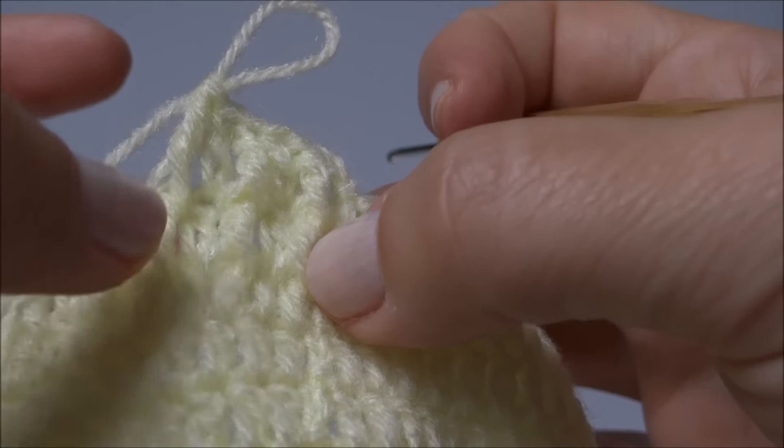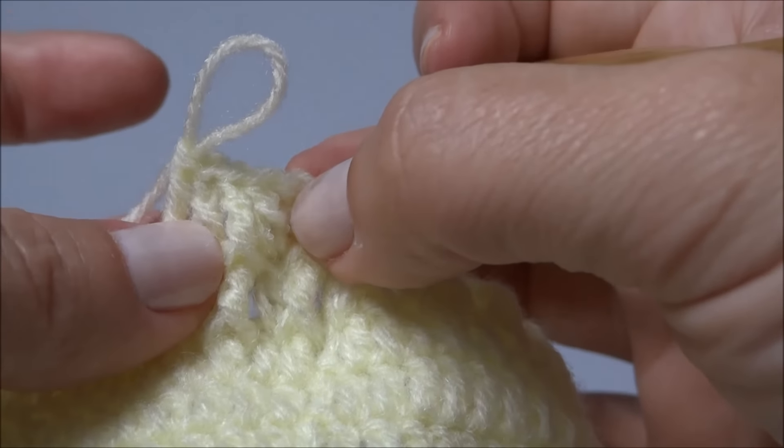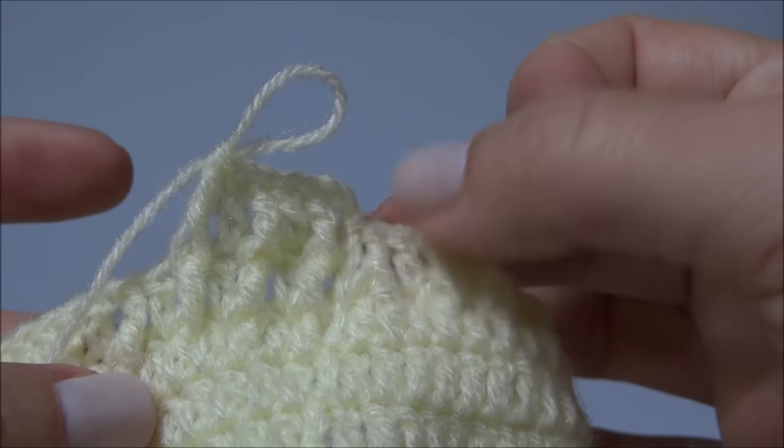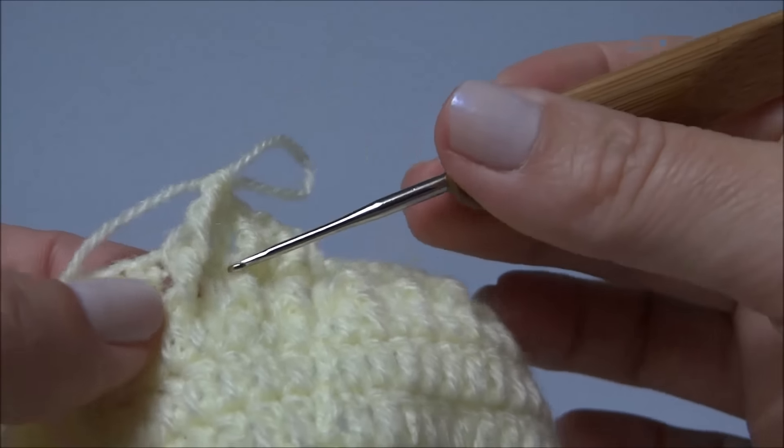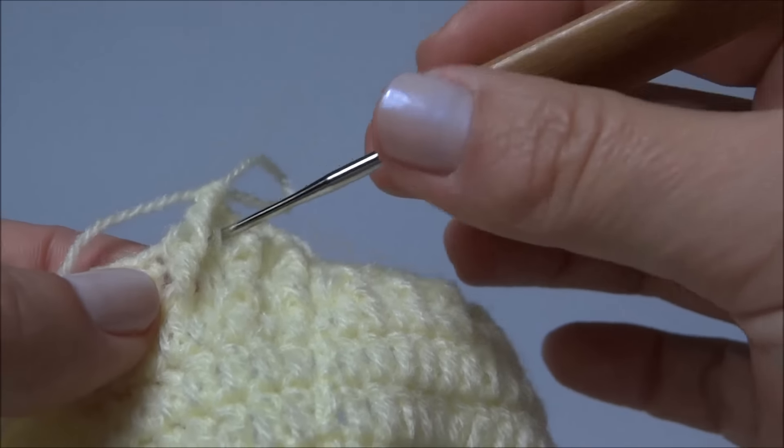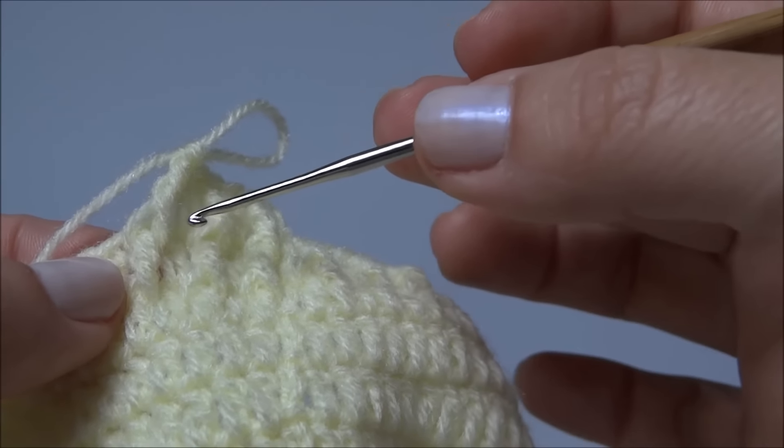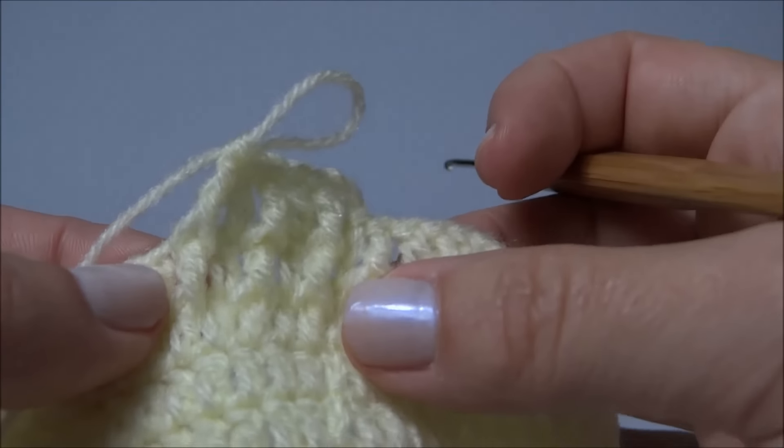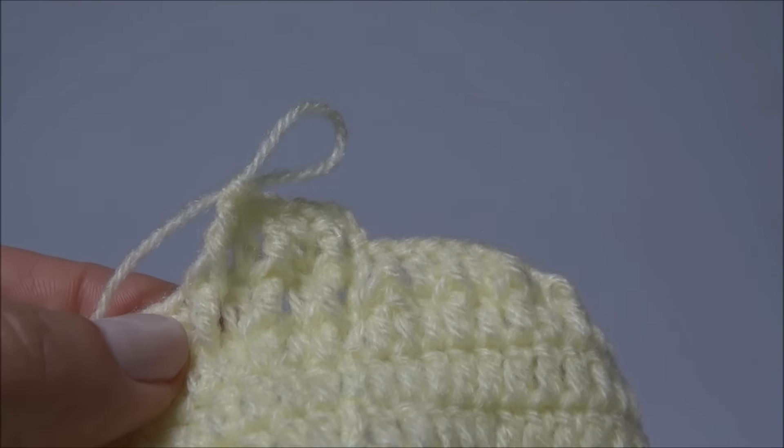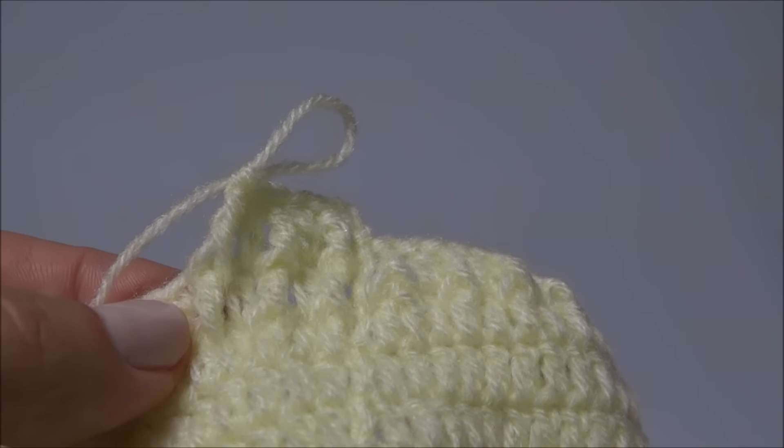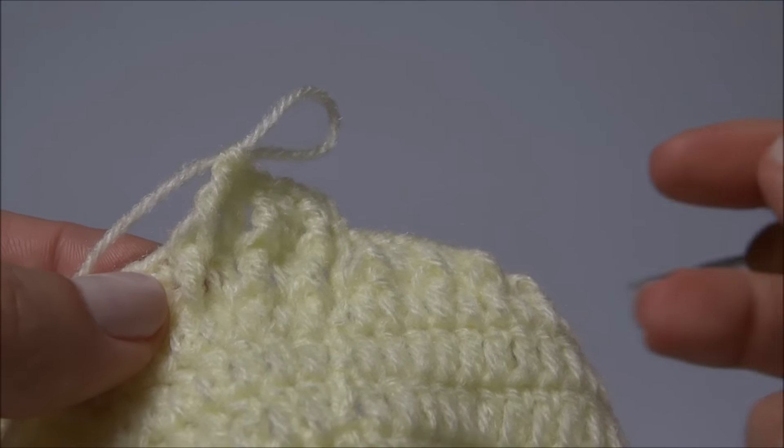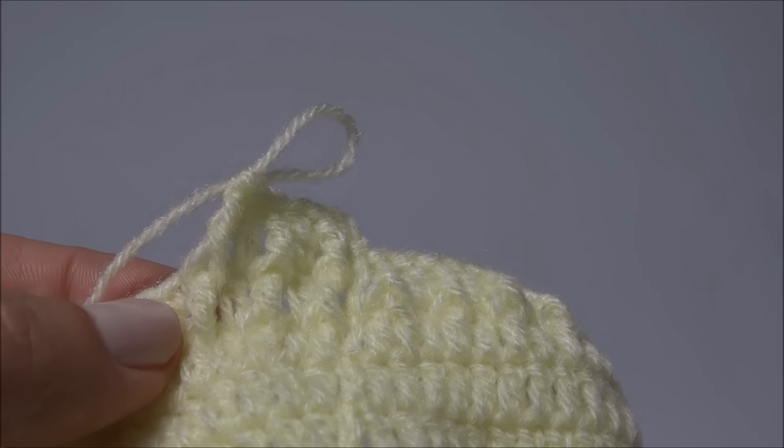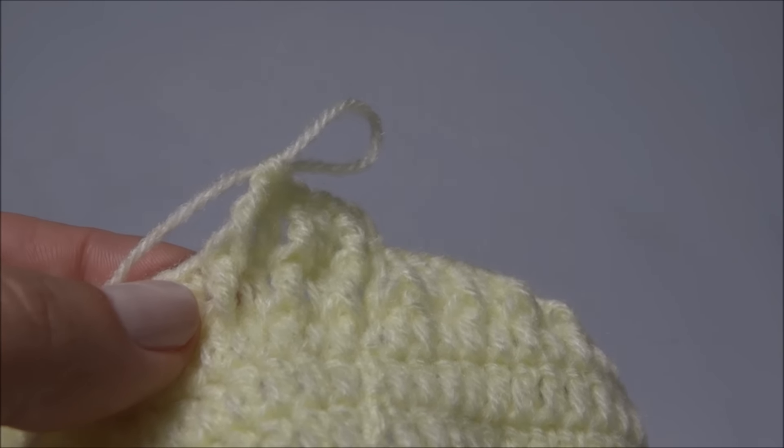Ou seja, já fizemos uma, estamos iniciando a segunda. Após finalizar a segunda, ainda vamos fazer a terceira. Ficando com três carreiras seguindo esse mesmo trabalho da barra um por um. Um duplo em relevo e um alto. Eu volto com as três carreiras finalizadas para darmos o acabamento na base da touquinha. E depois fazemos os enfeites, colocando os botõezinhos, fazendo as flores.